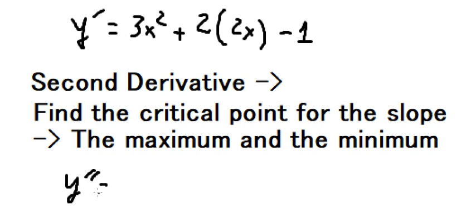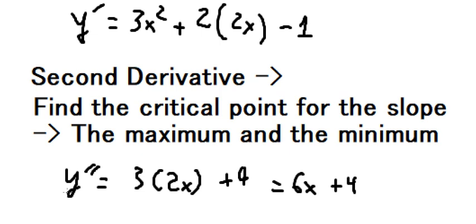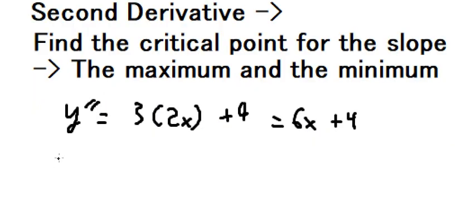The second derivative of 3x² is 6x. The derivative of 4x is 4. The derivative of -1 is 0. So we have y'' = 6x + 4. Now we put the second derivative equal to 0, so we have 6x + 4 = 0.